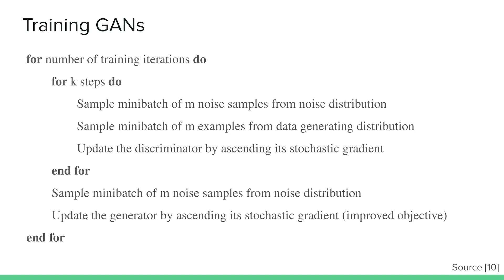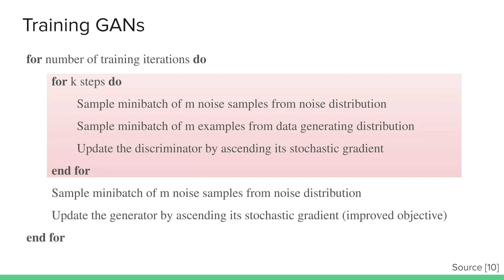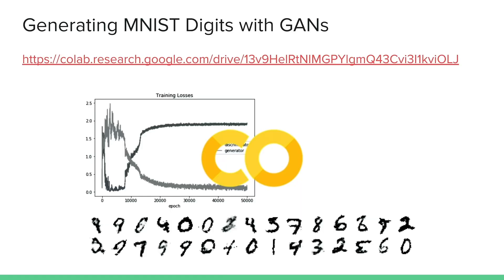To train a GAN, we take a number of training iterations: sample noise from our noise distribution and real data from our distribution, update the discriminator by ascending its stochastic gradient for a fixed number of steps (with the generator fixed), then sample noise again and update the generator by ascending its stochastic gradient. There is no clear rule yet for how long you should train each of the two parts — the discriminator versus the generator.